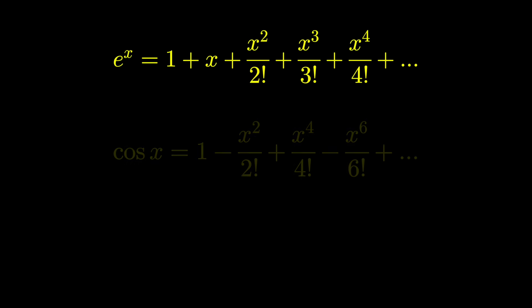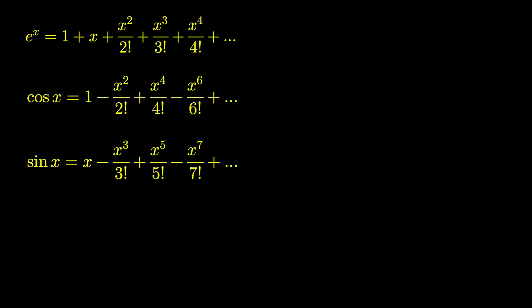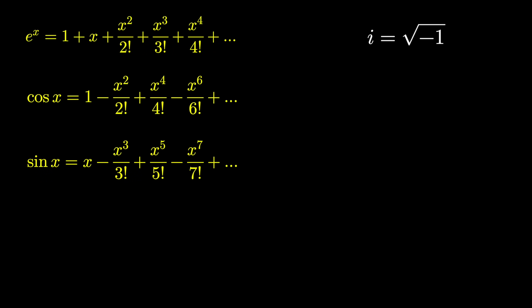You might know that we have a few special ways to represent a few special functions. Here's a representation for e to the x, cosine x, and sine x. And if we throw in a little bit of complex numbers, i squared is negative 1, i cubed is negative i, and i to the fourth is 1.